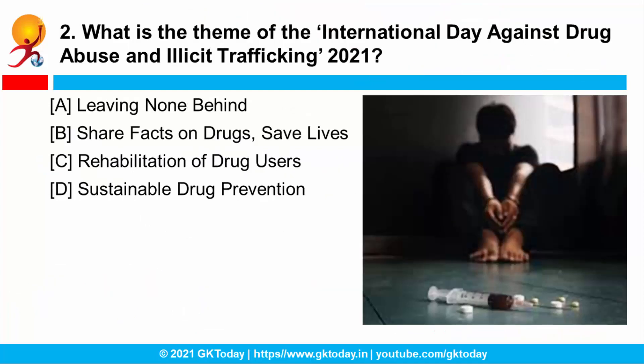Question number two: what is the theme of the International Day Against Drug Abuse and Illicit Trafficking 2021? We celebrate this day on 26th of June. It is observed worldwide to strengthen action and cooperation in achieving a sustainable world free of substance abuse. The theme for this year was 'Share Facts on Drugs, Save Lives.'